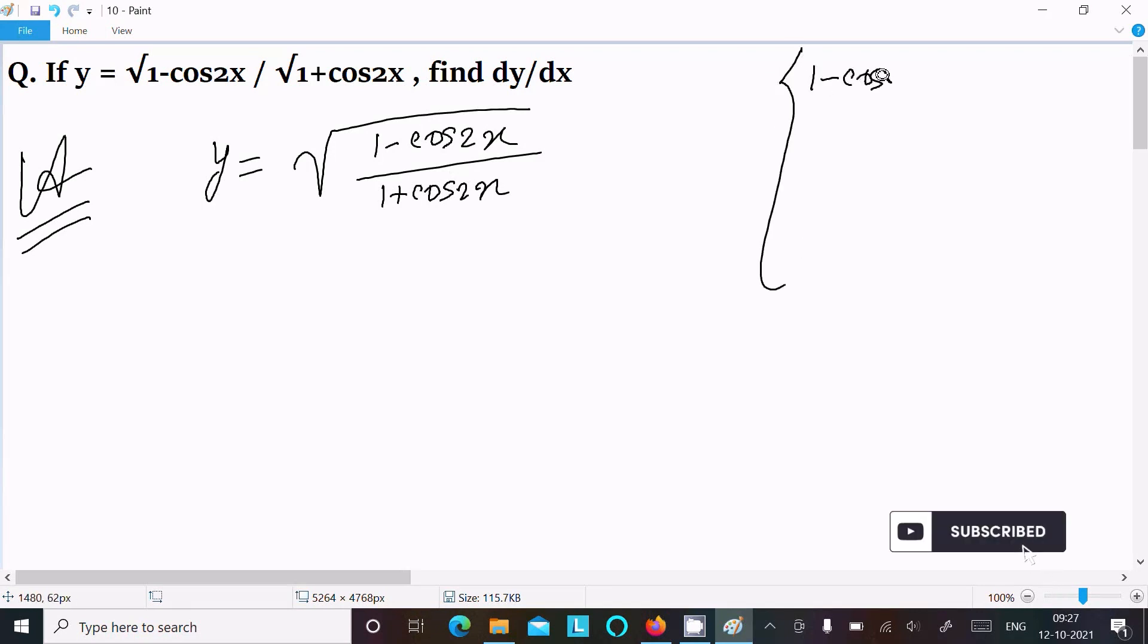1 plus cos 2x equal to 2 cos squared x. So writing here y equals 1 minus cos 2x which is 2 sin squared x.